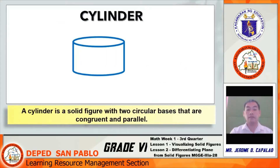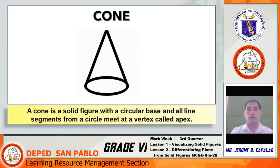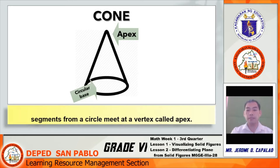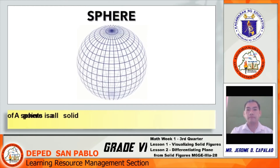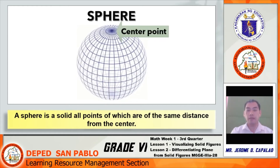Cylinder: a solid figure with two circular bases that are congruent and parallel. Cone: a solid figure with a circular base, and all line segments from the circle meet at a vertex called the apex. Sphere: a solid in which all points are of the same distance from the center.